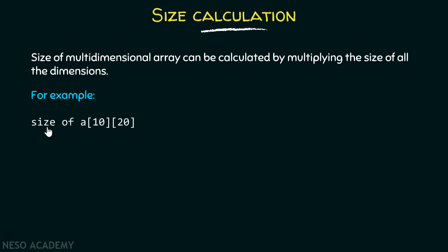For example, suppose I want to calculate the size of this particular array. Then I just have to multiply these two sizes, that is the number of elements. It gives me 200, which is the total number of elements it can contain. But I want to know the size in bytes, then I have to multiply 200 by 4, and it gives me 800 bytes.